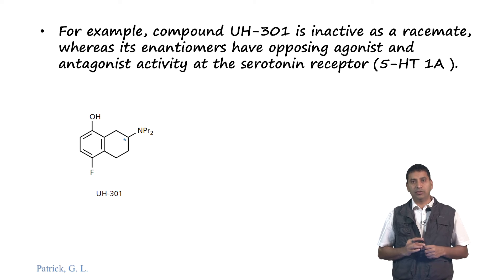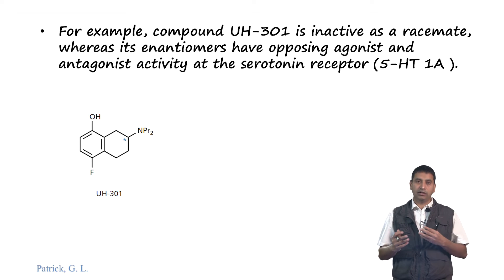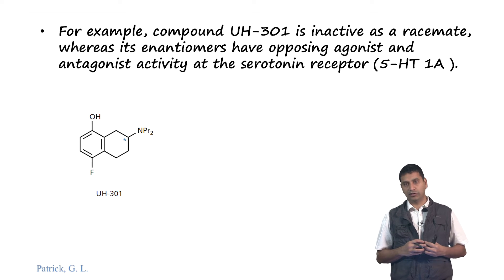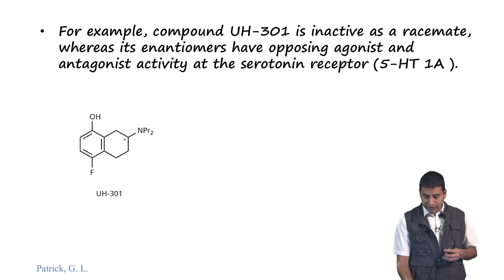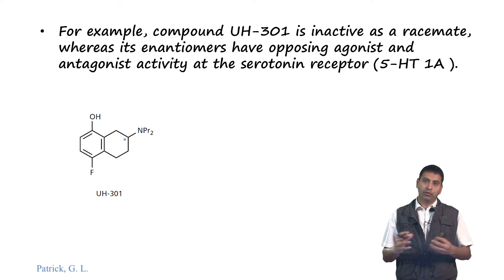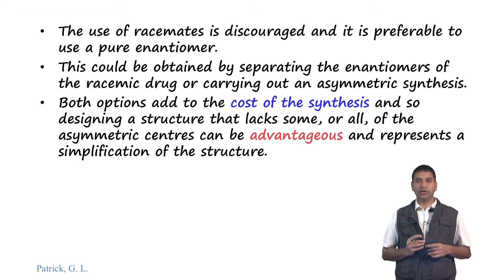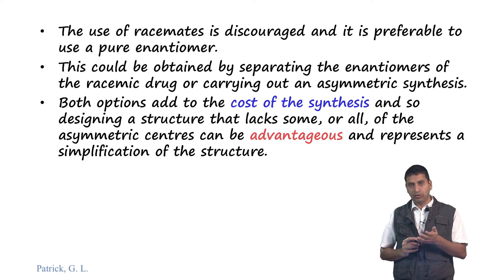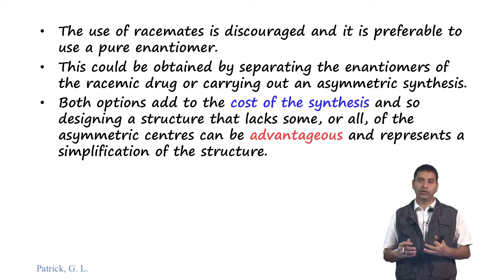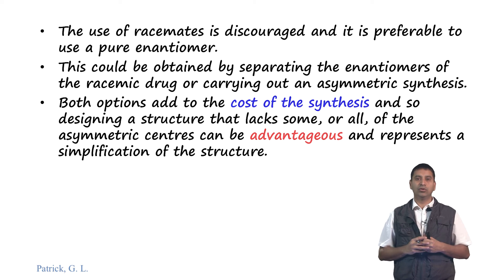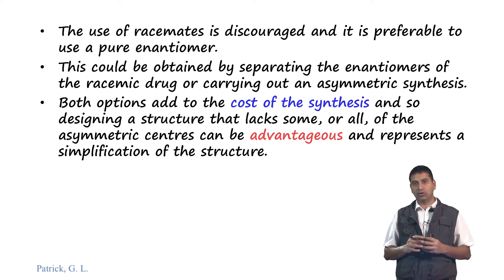Here is an example: the molecule UH301 is actually inactive as a racemate. This is a very interesting example because the opposing enantiomers - the R and S enantiomers - actually have opposing activity against the serotonin receptor. The R version has exactly the opposite activity of the S version. Therefore, when tested as a racemate, it is on the whole inactive. The racemate is therefore discouraged and it is preferable to use a pure enantiomer. We can separate enantiomers of the racemic drug, but this increases the cost of synthesis and results in approximately 50% yield loss.